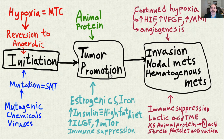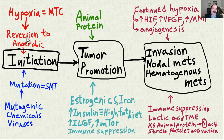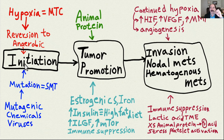Here's pretty much the map of cancer. Initiation is the initial injury to a cell that damages mitochondria. The somatic mutation theory emphasizes mutagenic chemicals and viruses. The metabolic theory of cancer emphasizes hypoxia and the Warburg effect — where the cancer cell has an injured mitochondria, can no longer do aerobic metabolism, and switches primarily to anaerobic metabolism. That's called the Warburg effect, and it is tumor initiation.